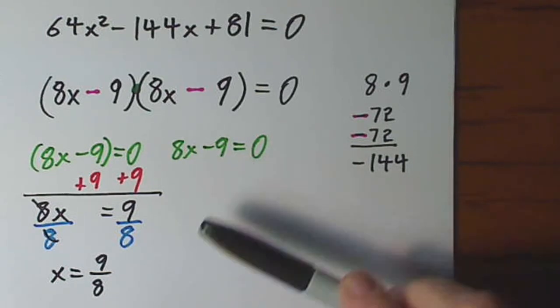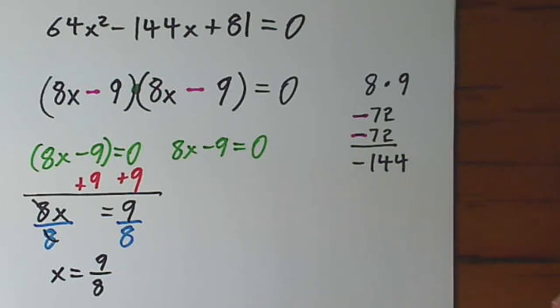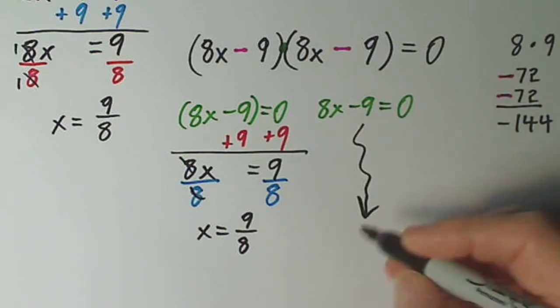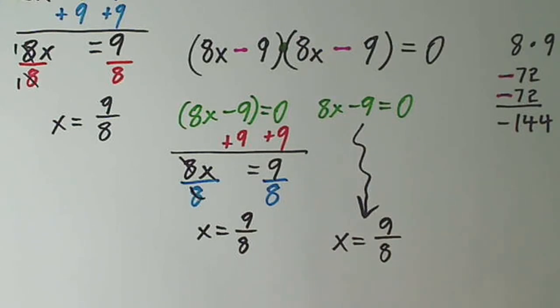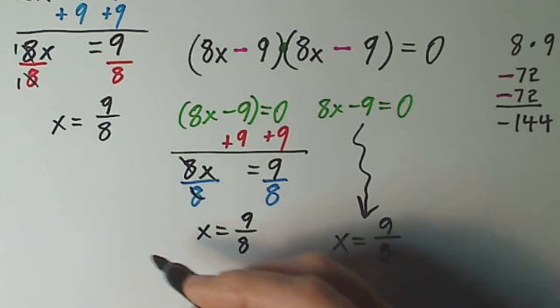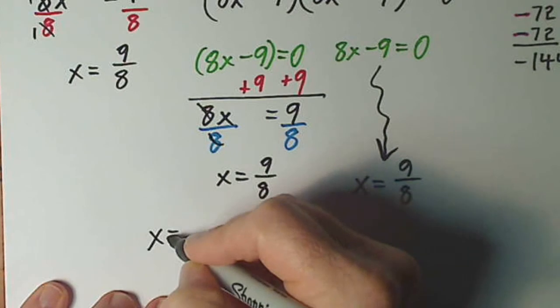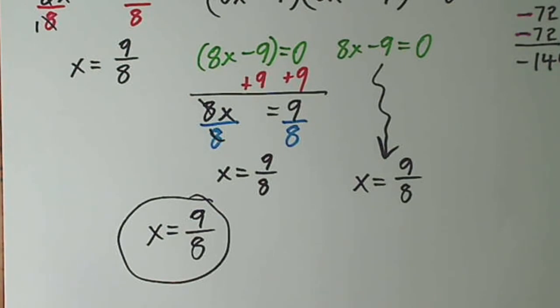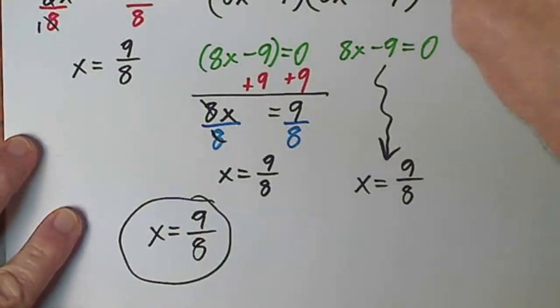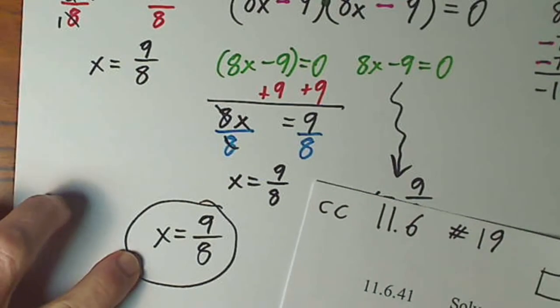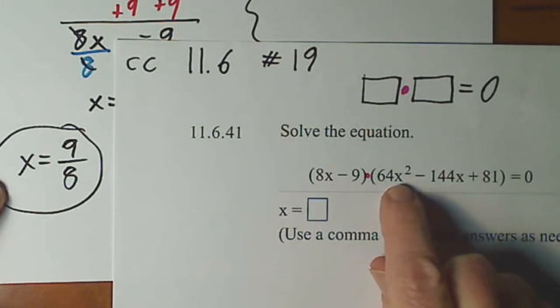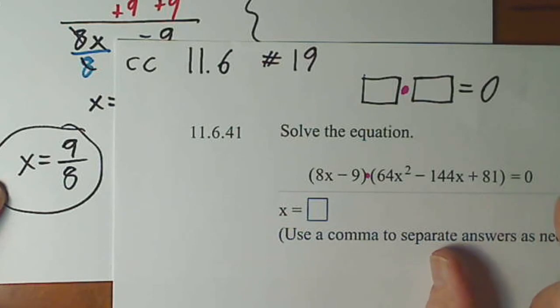I think you can see the exact same thing would happen here. You would get 9 eighths. Let's just say I work that out and I got x equals 9 eighths. So for a solution, since it's the same thing three times, you really only need to write it once. And this is saying you have an answer. You solve for x. It's 9 eighths. If you plug in 9 eighths here, 9 eighths here, and 9 eighths here, you will get 0. This is the solution to this equation.